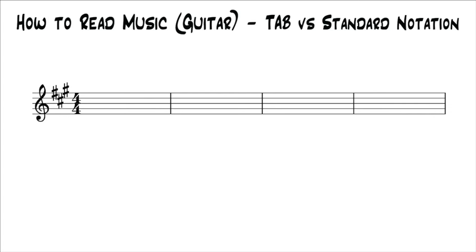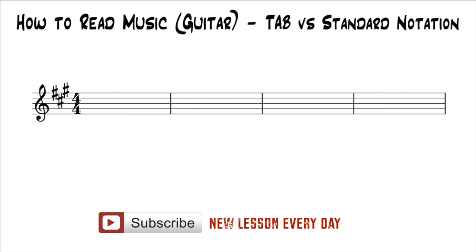Everything we've been looking at so far in this series has been standard notation. In this lesson, I want to talk about tab, or tablature. Tablature is another form of notation which is easier to read, but it's much more incomplete than standard notation. Most guitarists learn tab first, and a lot of guitarists never move on to standard notation. In this lesson, I want to show you how you can use standard notation to help you read tabs, because tab by itself is incomplete.